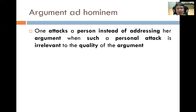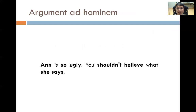Argument ad hominem: one attacks a person instead of addressing their argument when such a personal attack is irrelevant to the quality of the argument. This is a very common fallacy. For example: 'N is so ugly, you shouldn't believe what she says.' Just because someone is ugly, it has totally no consequence to whether what they say is right or wrong. Don't go around insulting people when arguing — it just doesn't make any sense.